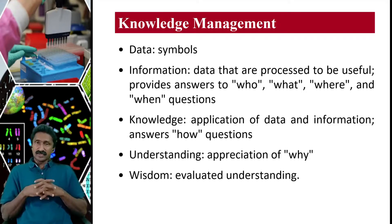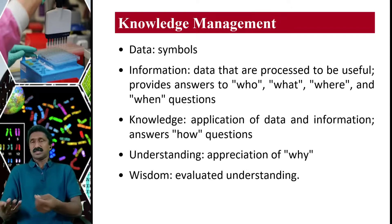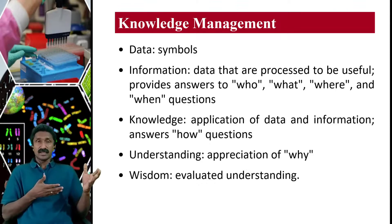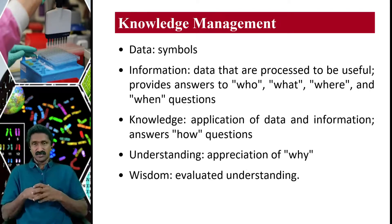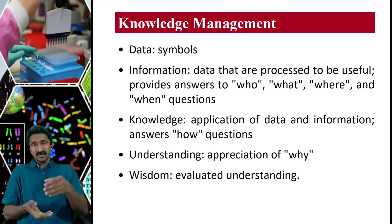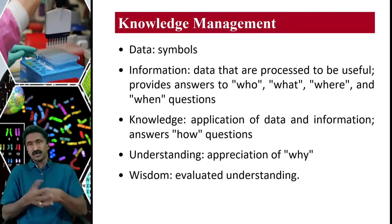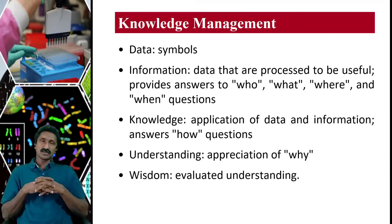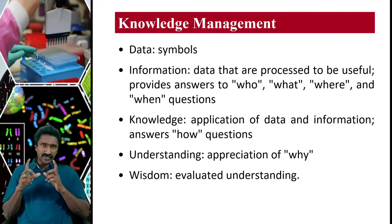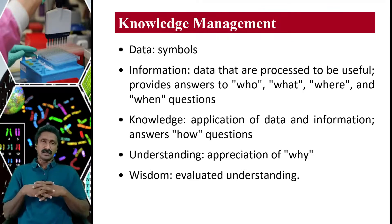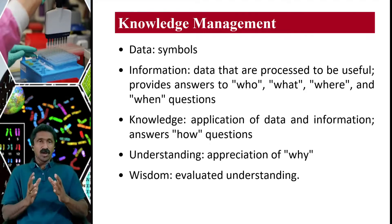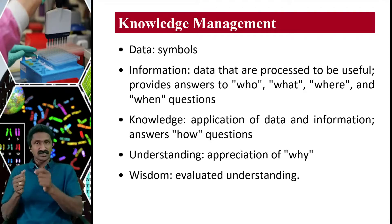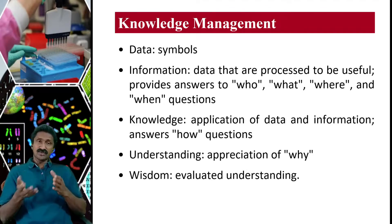If somebody else looks at your notebook with scribbled remarks, it may not be proper information for them, because it's only raw data that needs to be processed to generate something useful. For example, to answer a question from notes, you need to properly arrange and organize them. Data consists of symbols without structure, whereas information is data processed to be useful, answering who, what, where, and when. Knowledge is the application of data and information.